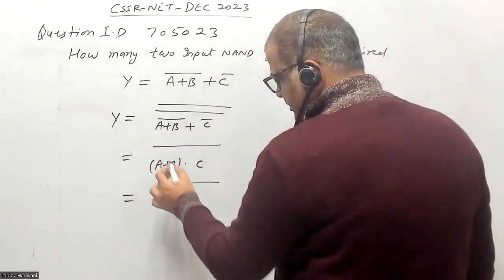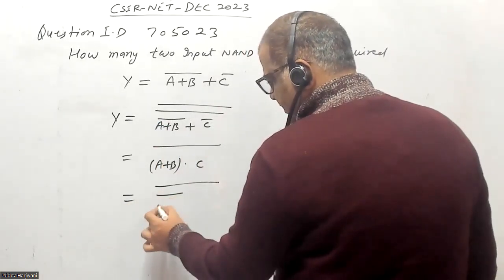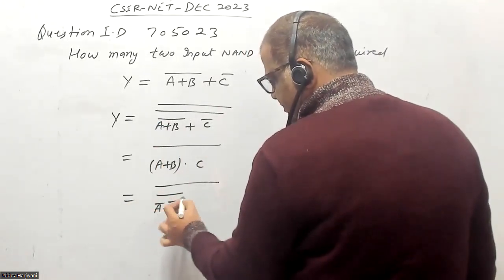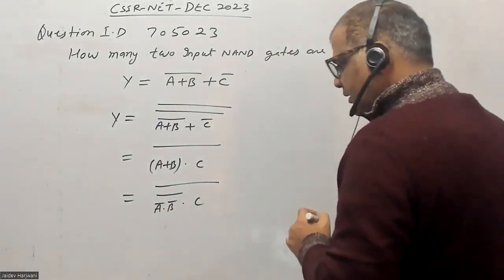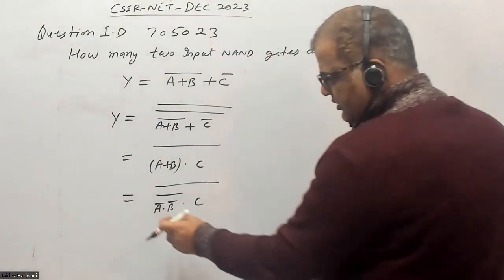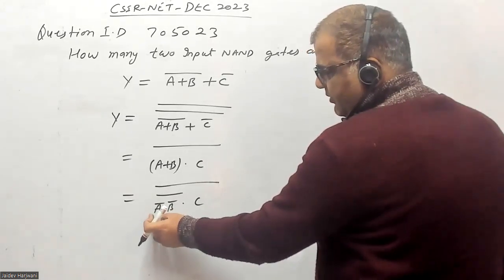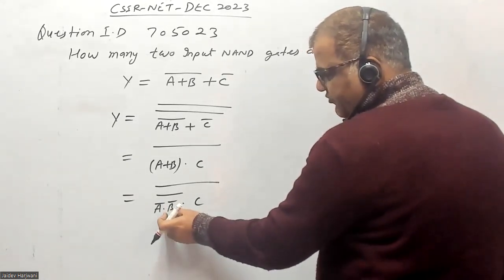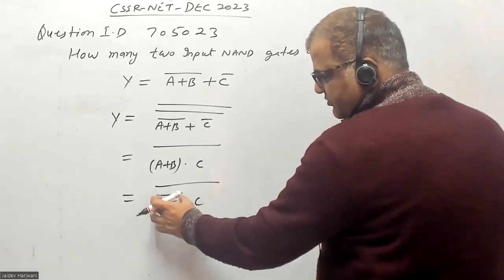So this you can write as A bar plus B bar dot C. So now you require one NAND gate to make A bar, one for B bar, and then you make this, you have to make this product.